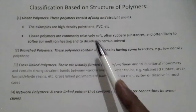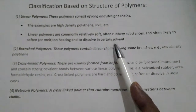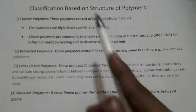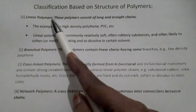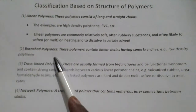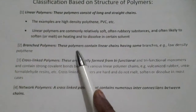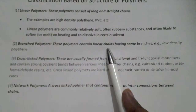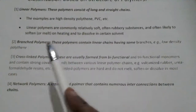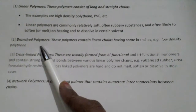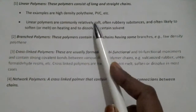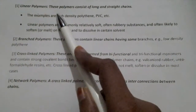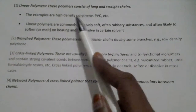Linear polymers melt on heating and dissolve in certain solvents. Those are the properties of linear polymers. Now, branched polymers — these polymers contain linear chains having some branches, hence called branched polymers.